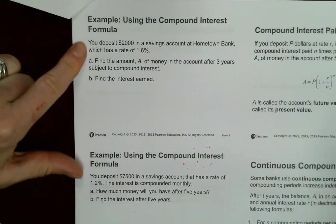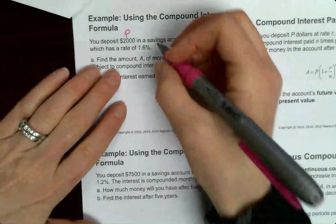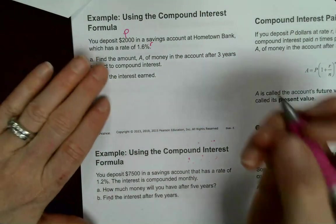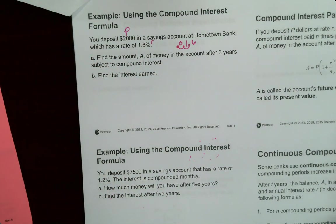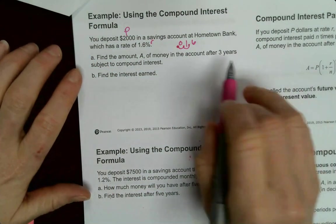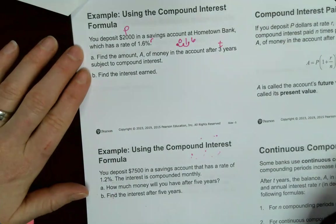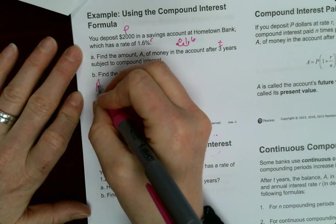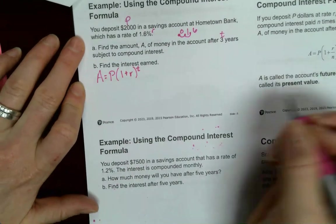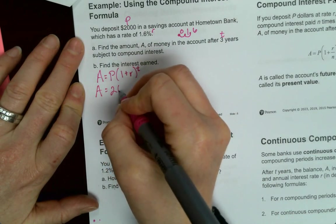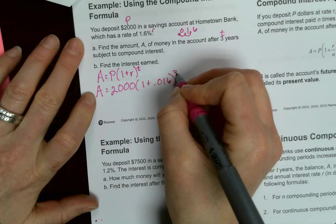Let's say we have this example where we have $2,000 is our principal amount. A rate of 1.6, so 1.6% or 0.016 will be our rate. And we want to find, after three years, what is the amount of money in the account. So T is 3. So remember our formula. It's going to be 2,000 times (1 + 0.016) to the T, which is 3.